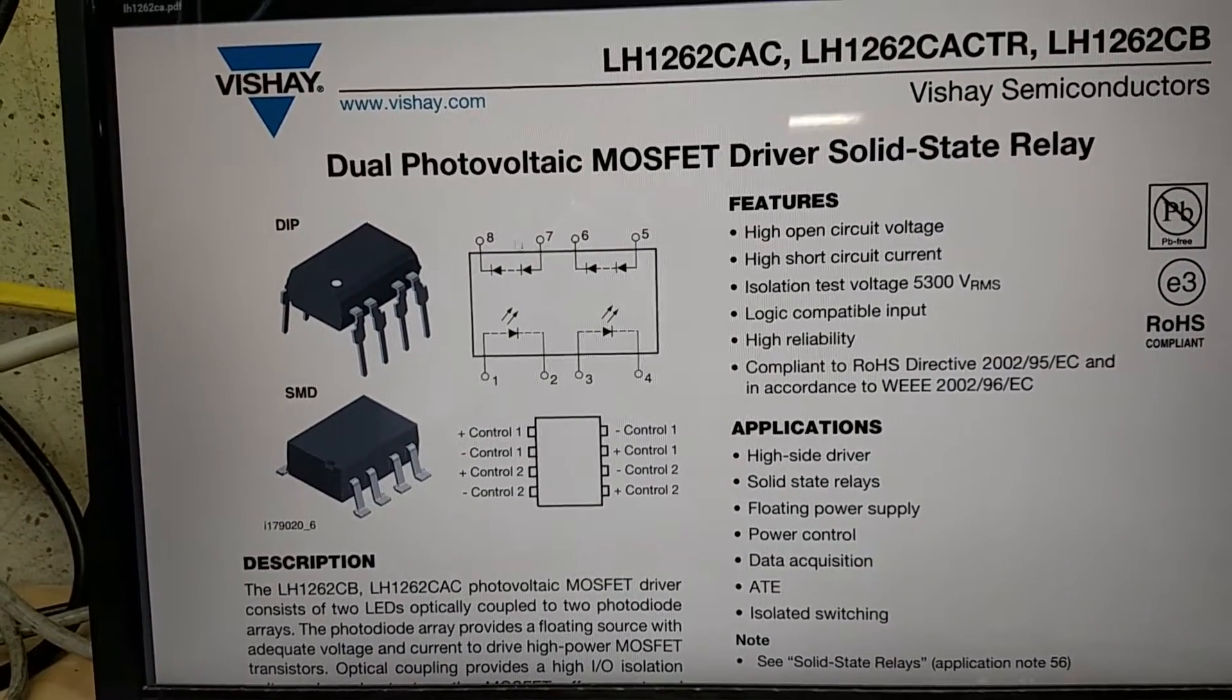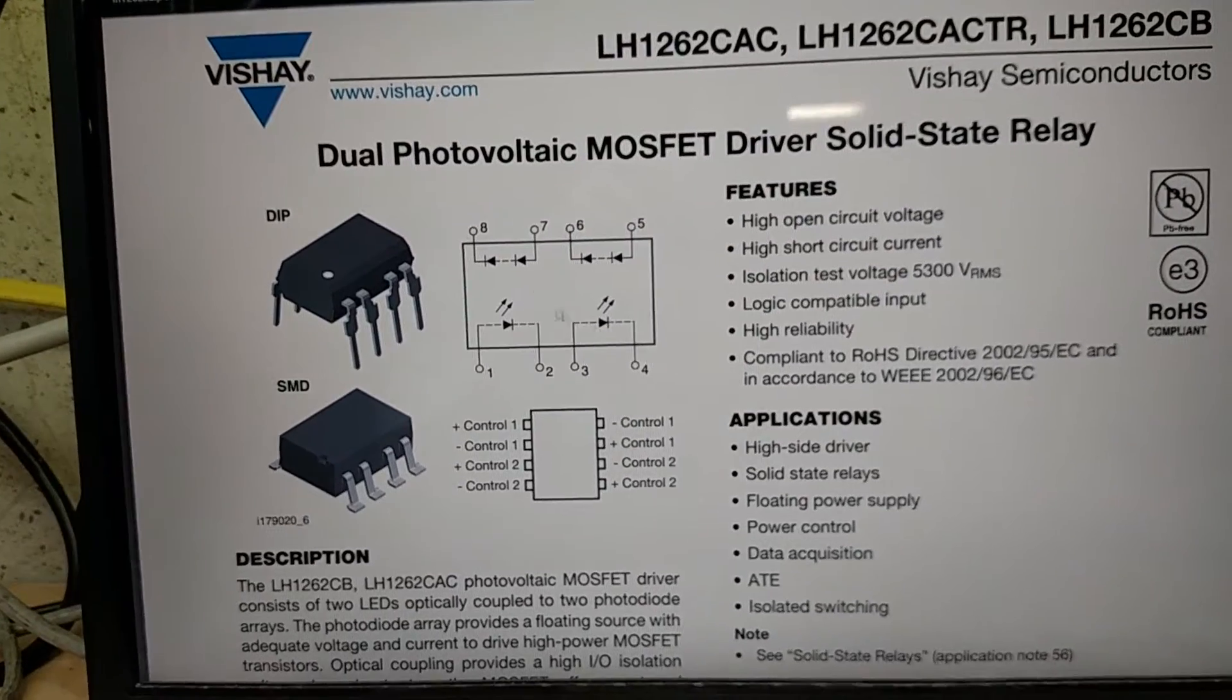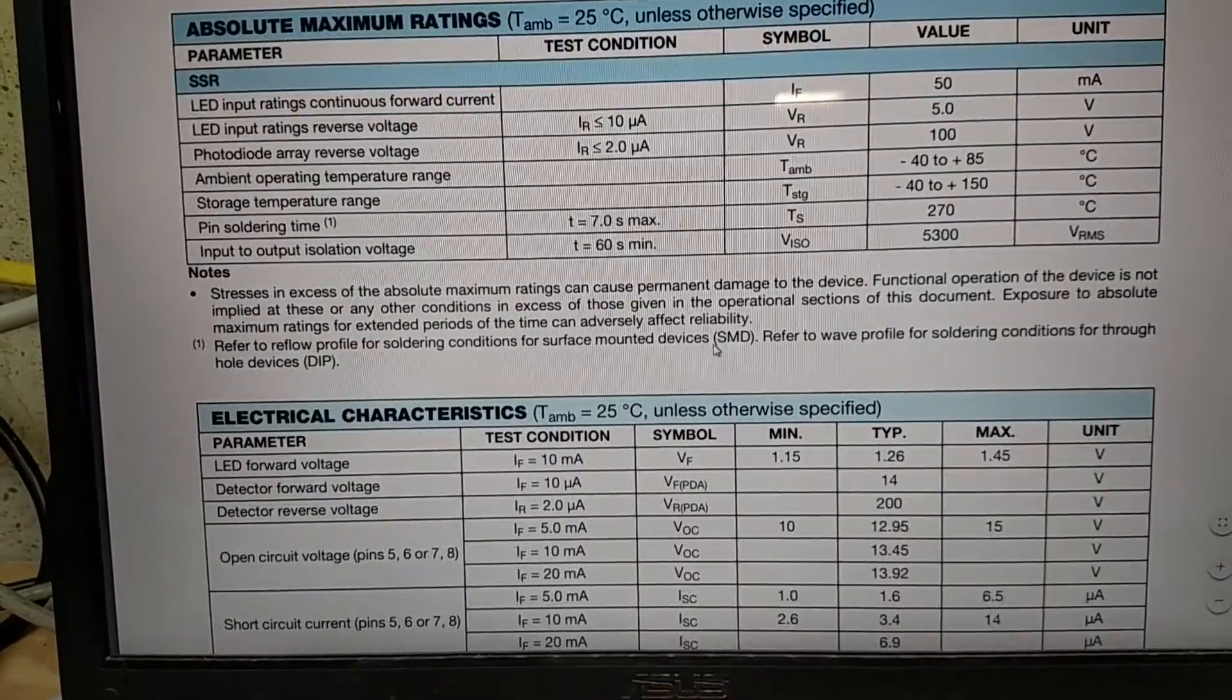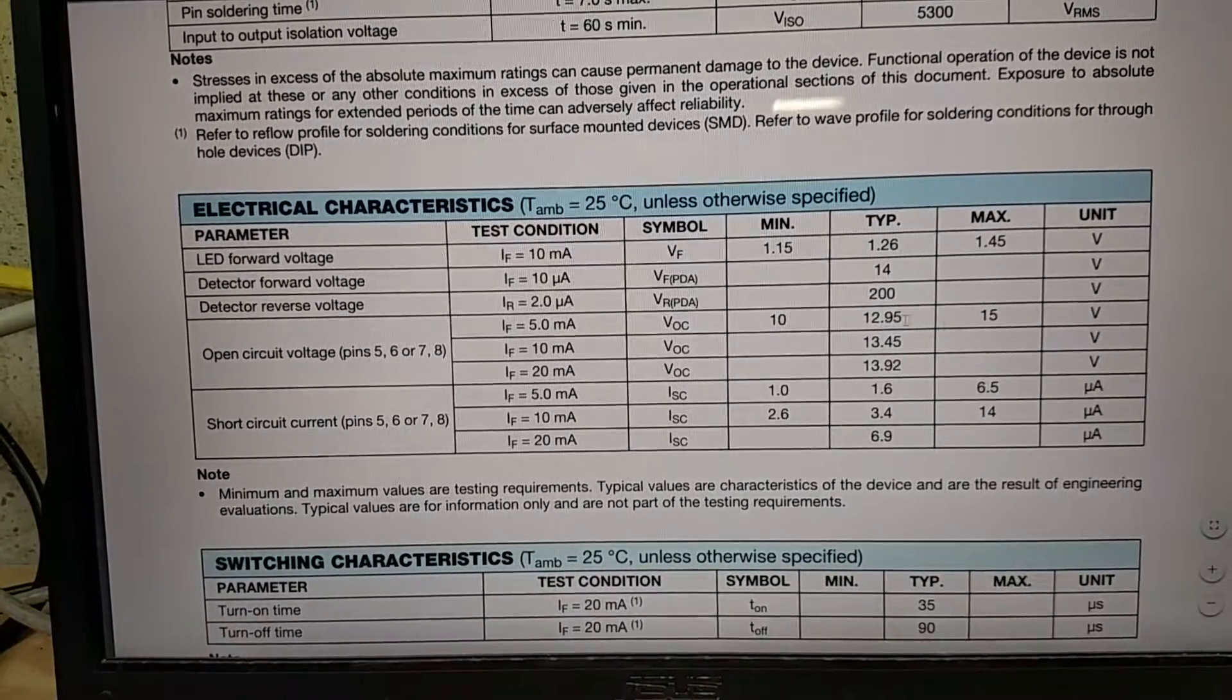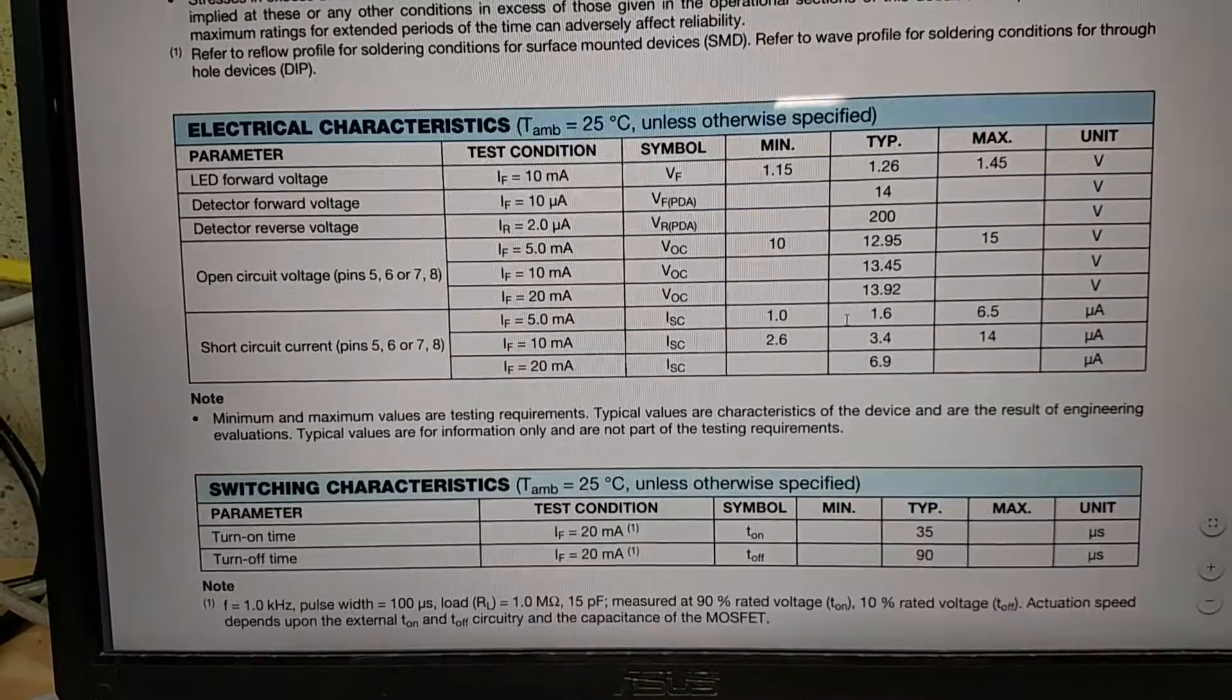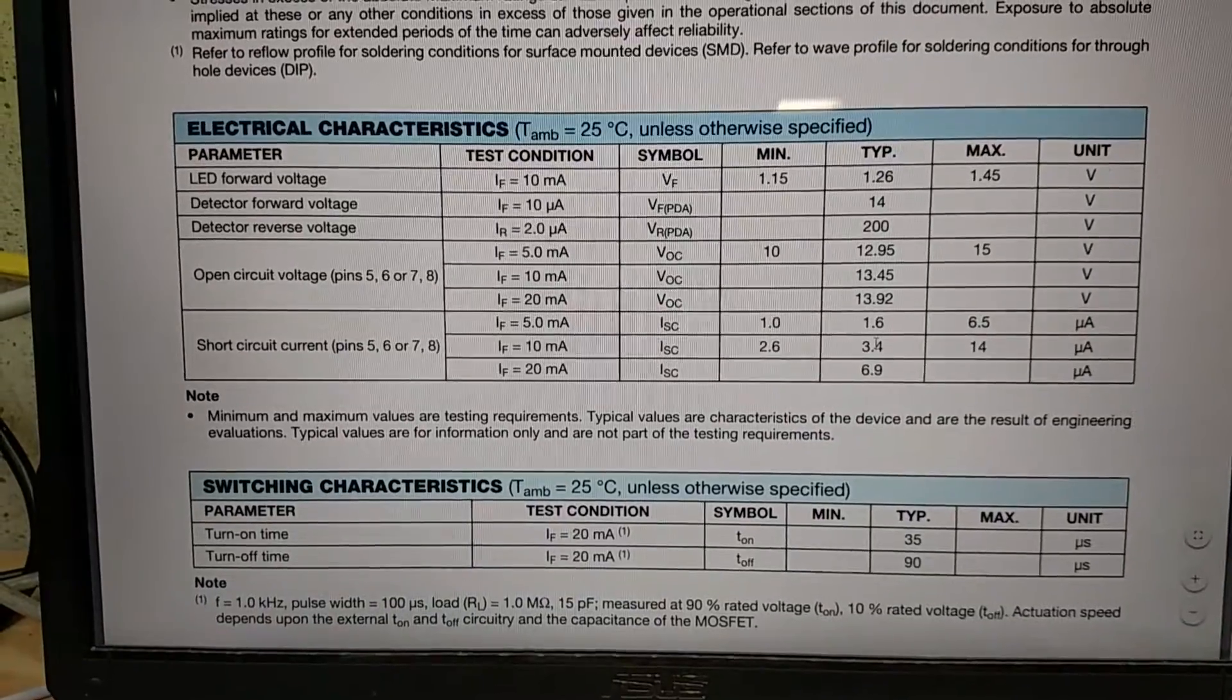I'm going to use 12 volts through a 1k resistor and that will generate about 10 milliamps. And then on the other side here I've actually connected these in parallel to double my current. If we scroll down we can see that open circuit voltage is typically around 10 to 13 to 15 volts, but we are not going to be doing open circuit otherwise your MOSFET would never turn off, right?